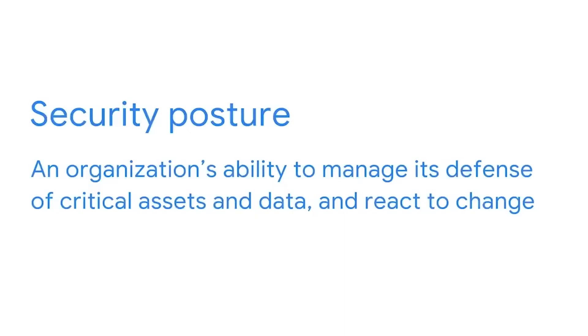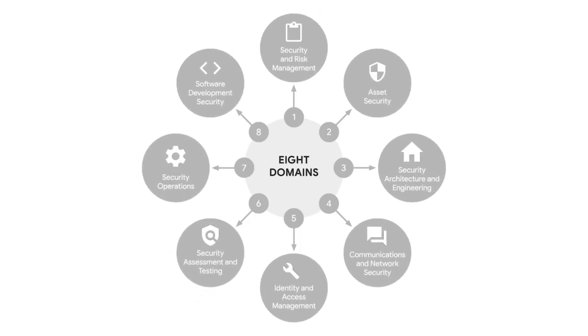You might remember from course one that there are eight security domains or categories identified by CISSP. Security teams use them to organize daily tasks and identify gaps in security that could cause negative consequences for an organization and to establish their security posture. Security posture refers to an organization's ability to manage its defense of critical assets and data and react to change. In this video, we'll discuss the focus of the first four domains.